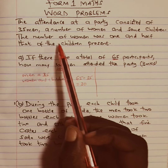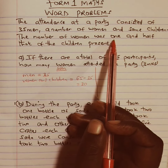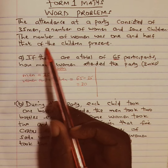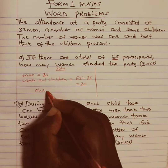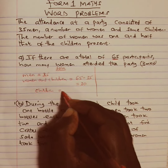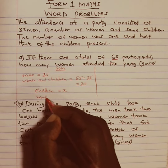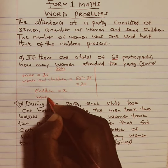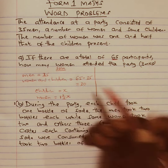The question says the number of women was one and a half times the number of children. So if we let the children be x, then women would be one and a half times x. We know that if we take the sum of children and women, we will get 30.